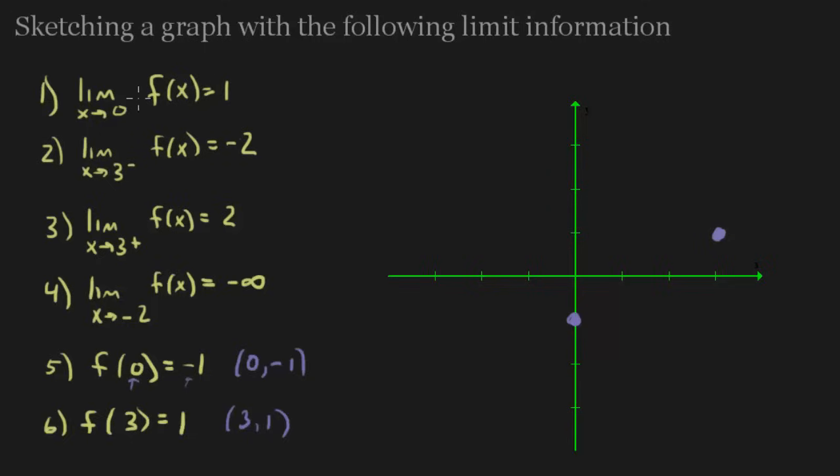Alright, so when you look at this, you can actually think of it as the point, well the x value is approaching 0, and the y value is approaching 1, so I can go ahead and try plotting the point 0, 1. But the problem is, is that a limit is not a real point. So what we would do is we would put an open dot there, at 0, 1.